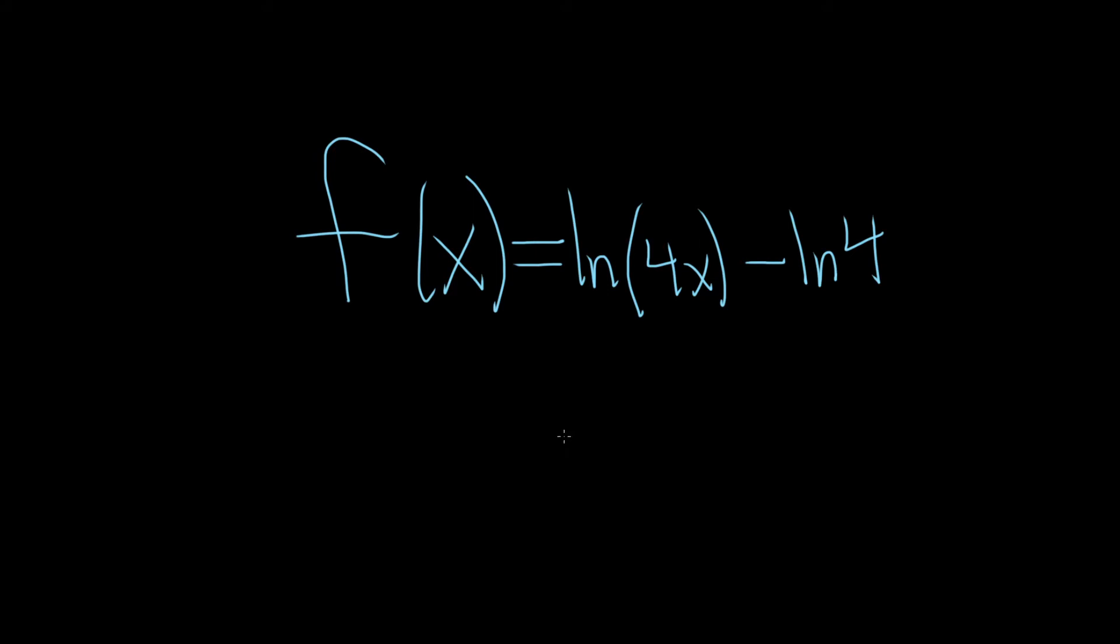The question is to use properties of logarithms to simplify the function. So the goal here is to use some of the properties, and the one we're going to use is called the product rule, because we have 4 times x. So I'll write it above the problem so you see it.